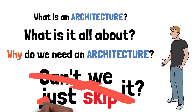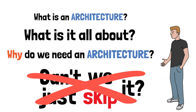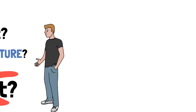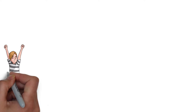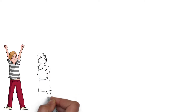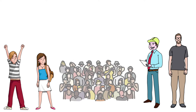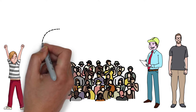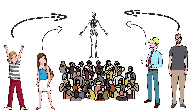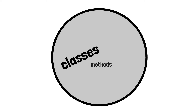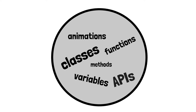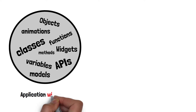Can't we just skip it? No, we can't skip it at all, because as simple and as natural as it may be, if you think a little bit in depth, we as a human species can't live without a pretty fine and stable architecture, which is mainly our skeleton. Imagine having all kinds of different classes, methods, functions, variables all over the place. This is definitely going to result in a total failure.